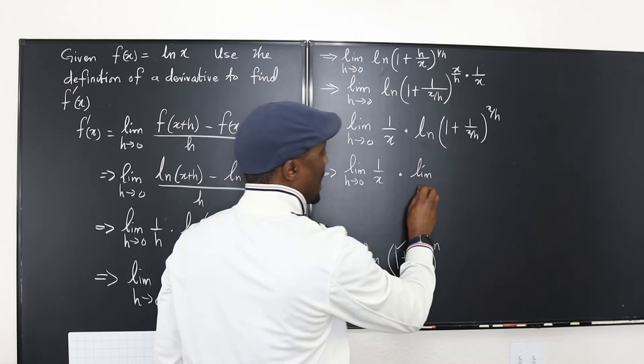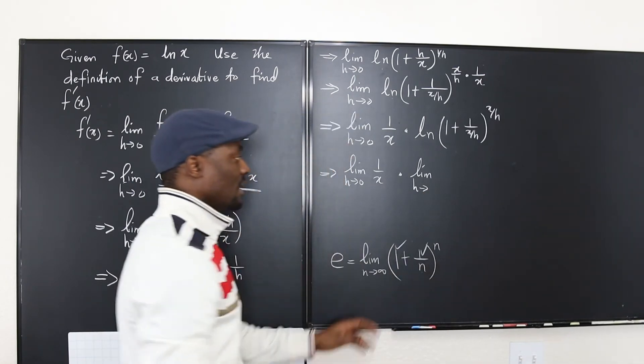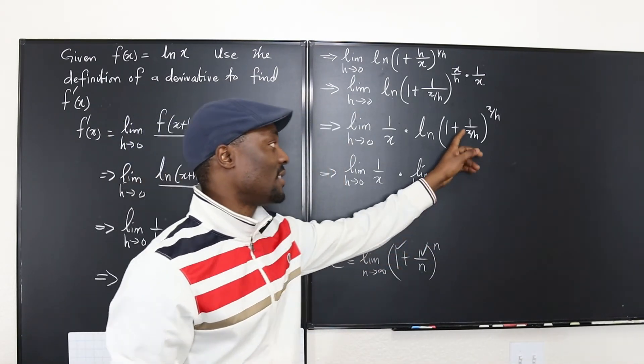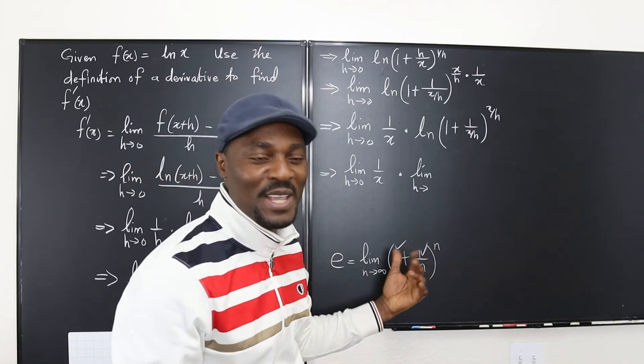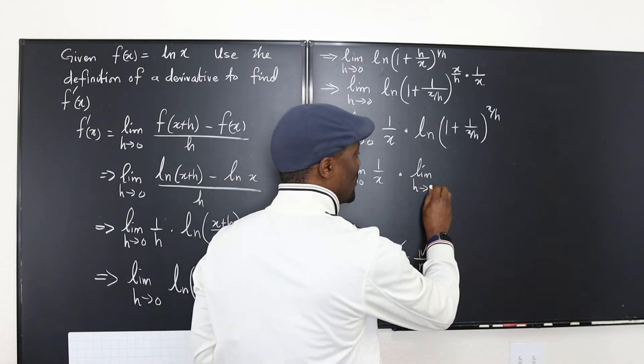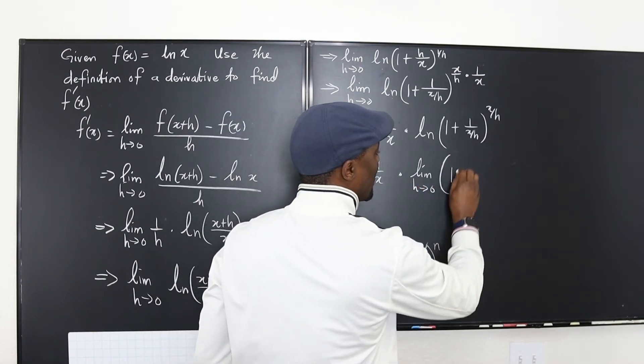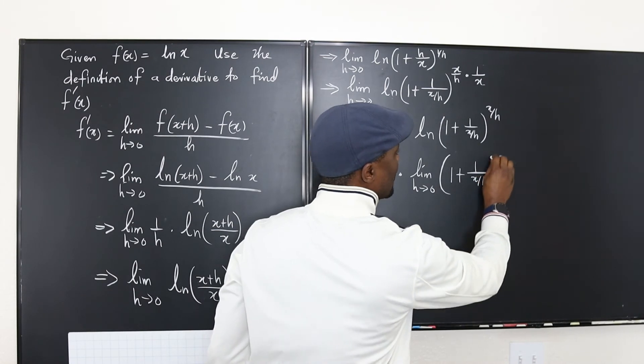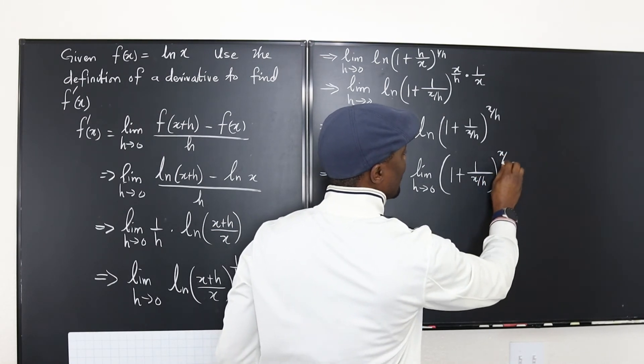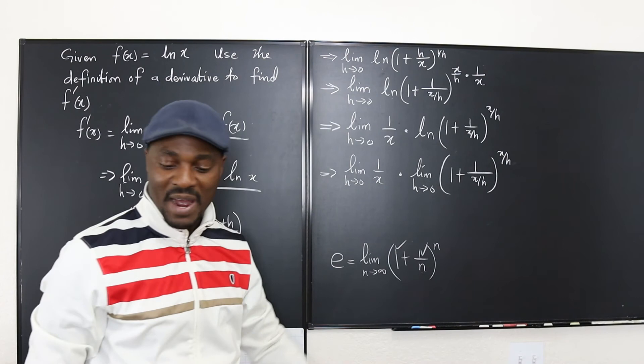And this will be equal to the limit as h goes to 0 of 1 over x multiplied by the limit as h goes to 0. Instead of me saying h goes to 0 I could say as x over h but that would be a variable coming into this. So I'll just leave it as h goes to 0 of 1 plus 1 over x over h to x over h. And that will be my e.